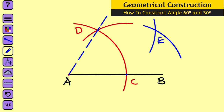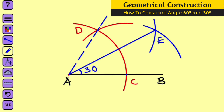Use your ruler to connect point E and point A together. What we are having here is angle 30 degrees.